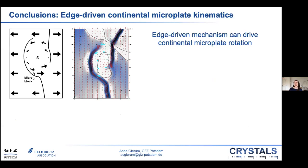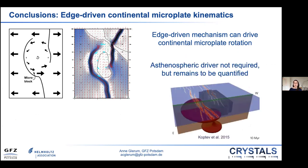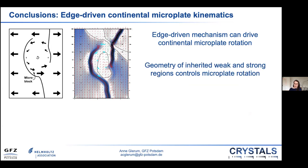The conclusions of this first set of numerical experiments: first, we have demonstrated that the motion of the major plates transmitted to the microplate along its stronger edges can cause a continental microplate to rotate. An asthenospheric driver is not required to induce this rotation, but we are working on quantifying a possible contribution. Second, for a given set of boundary conditions, the distribution of weaker and stronger areas controls the rotation of the microplate in terms of rotation velocity and pole position.